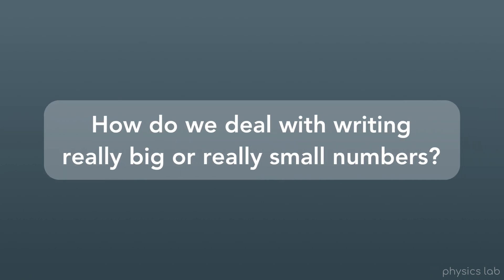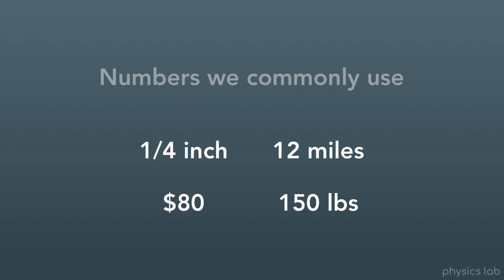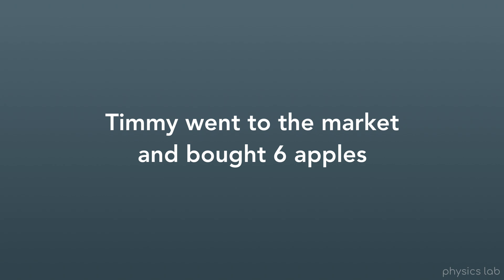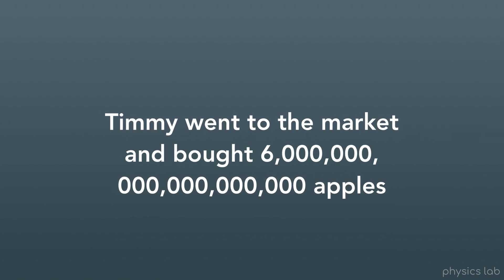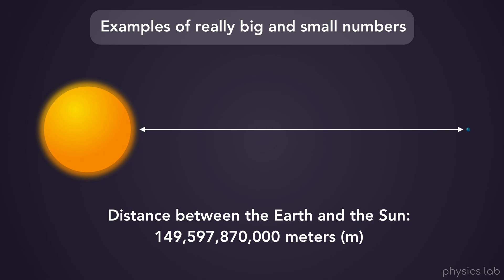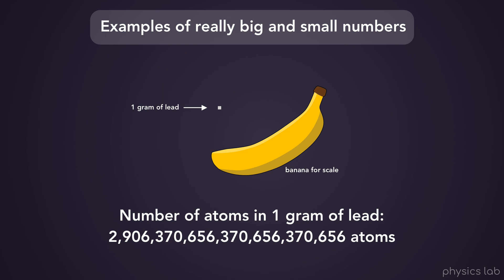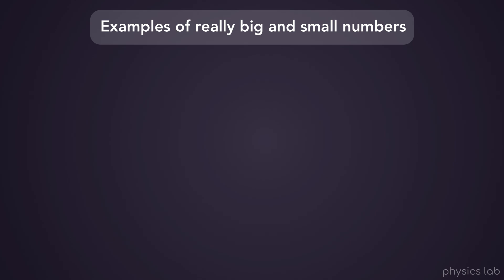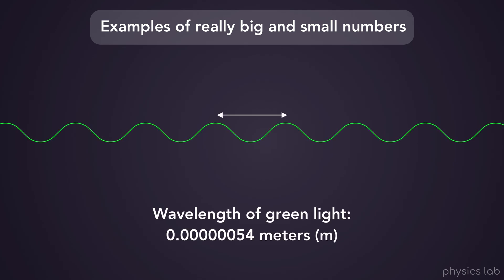So first, let's talk about how we deal with writing really big or really small numbers. This might not seem like something we have to worry about, because the numbers we use every day aren't really big or really small, so they're easy to write. For example, Timmy went to the market and bought 6 apples — or even 600. But what if Timmy bought 6 quintillion apples? Then it gets a little ridiculous to write out such a large number. Let's look at some real examples: the distance between the Earth and the Sun is 149,597,870,000 meters; the number of atoms in 1 gram of lead is a really big number; and on the small end, the wavelength of green light is 0.00000054 meters. Writing out all of these numbers like this every time would be crazy.